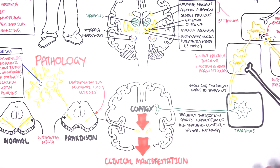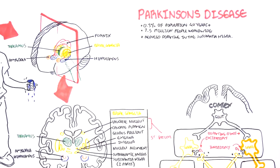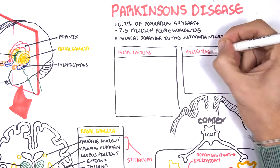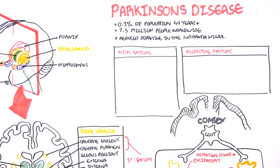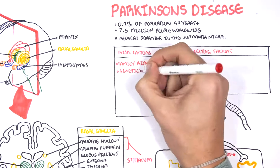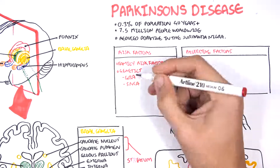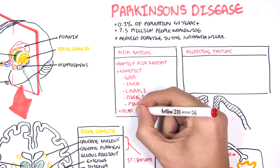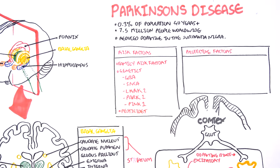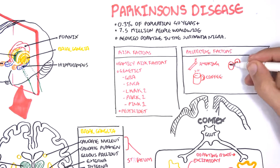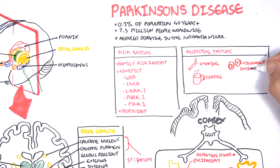Now let's talk about the risk factors and protective factors of Parkinson's disease. Risk factors include genetic risk factors such as GBA, SNCA, LRRK2, PARK2, and PINK1, as well as pesticides, which have been shown to cause Parkinson's disease. Protective factors include smoking, coffee, vigorous exercising, and the use of non-steroidal anti-inflammatory drugs.